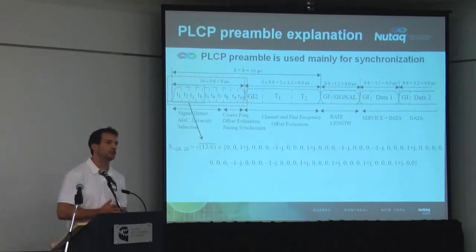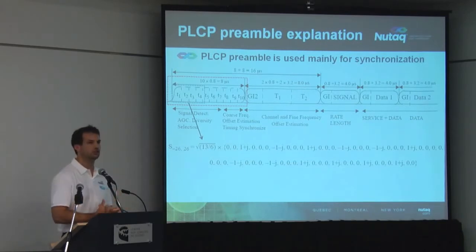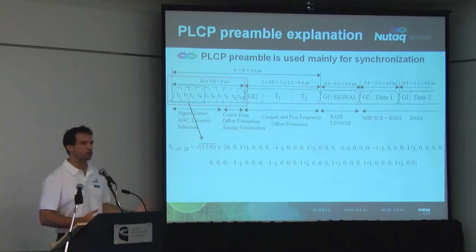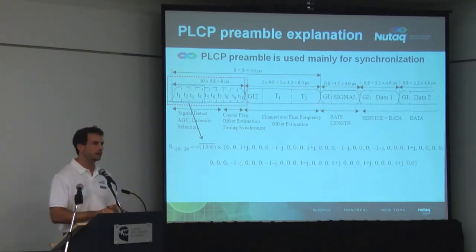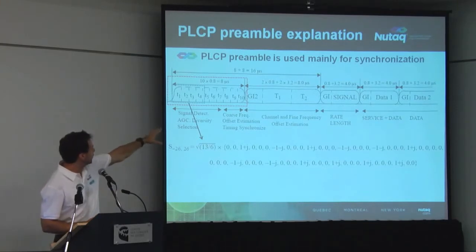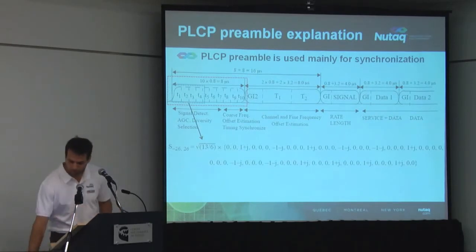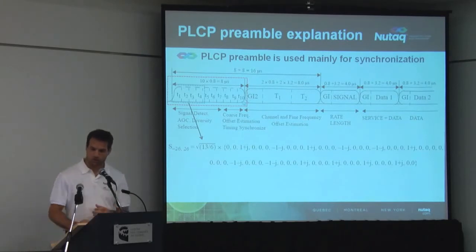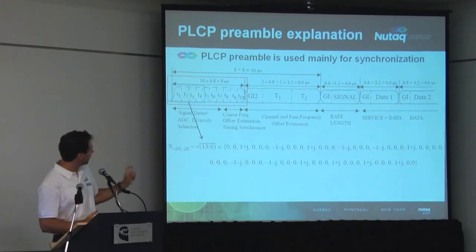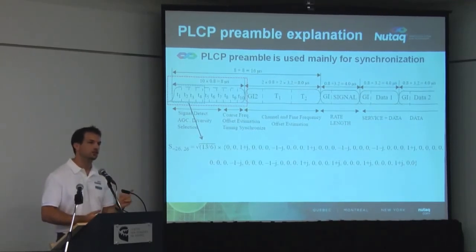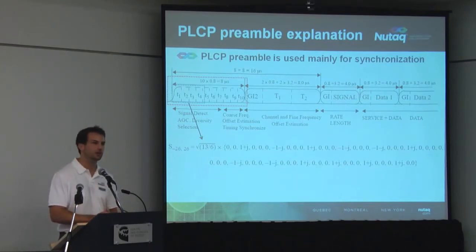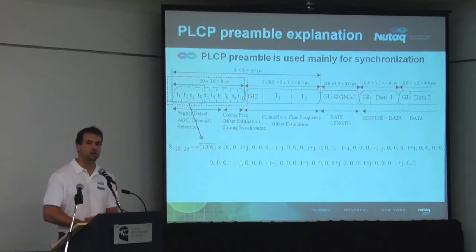In the 802.11a specification, the PLCP preamble is mainly used for synchronization. Here you have the frame structure of the Wi-Fi standard packet, and we'll focus on the first part — the preamble — which is used for synchronization purposes. That preamble is made of ten sequences which are periodic, and we'll see why the fact that this preamble is periodic brings a really good advantage for detection purposes.